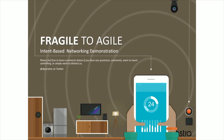The theme of our webinar today is 'Fragile to Agile,' and it's really a demonstration of intent-based networking with AOS. What do we mean when we say fragile? Is the network itself fragile, or is it the processes around the network that network engineers engage in to design, deploy, and support the network?